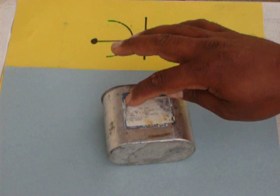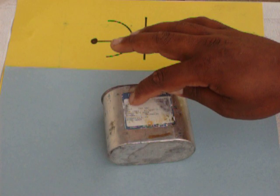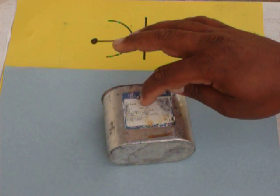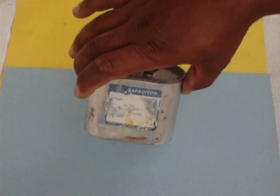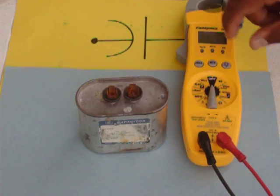This one says 35 UF, 440 VAC. So 35 microfarads, 440 volts. Your meter won't check the voltage. It's only going to check the microfarads. Take your meter.